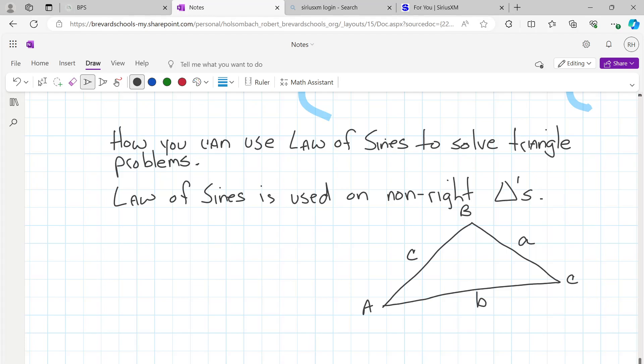What the law of sines states is that sine of angle A over the length of side a equals sine of angle B over the length of side b, and that's also equal to sine of angle C over side c.